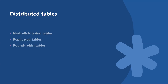Let's talk about hash distributed tables. A hash distributed table distributes rows based on the value in the distribution column. A hash distributed table is designed to achieve high performance for queries on large tables. There are several factors to consider when choosing a distribution column.